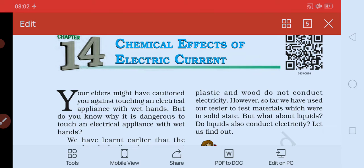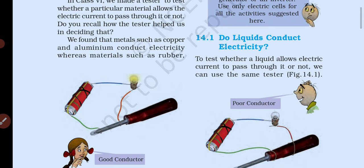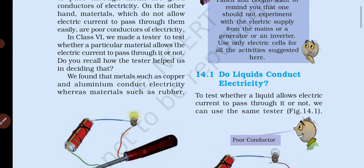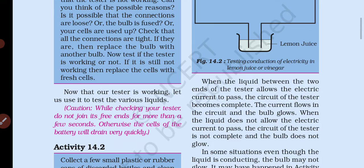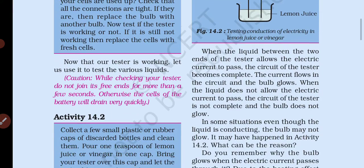So far we have used our tester to test materials which were in solid state, but what about liquids? We can see the tester — the metal part — connected with a cell and a bulb to check if the bulb glows. When we test a plastic part, even with the cell connected, electricity does not pass and the bulb doesn't turn on. We can use the same tester and replace the cell with a battery. Before using the tester, we should check whether it is working or not.